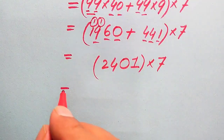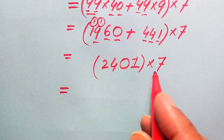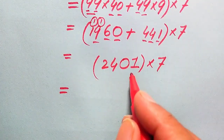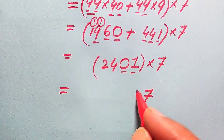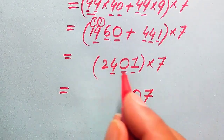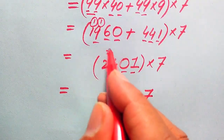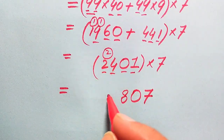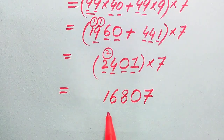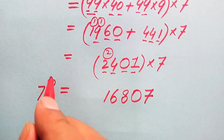Now we multiply 2401 by 7: 7 times 1 is 7; 7 times 0 is 0; 7 times 4 is 28, write 8 carry 2; 7 times 2 is 14, plus 2 is 16. So we get 16807. This is the value of 7 to the power of 5.